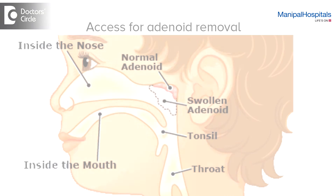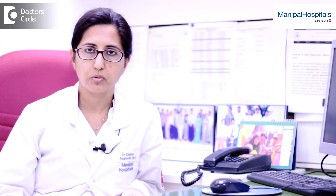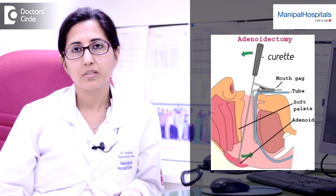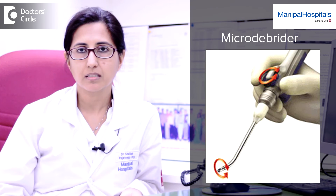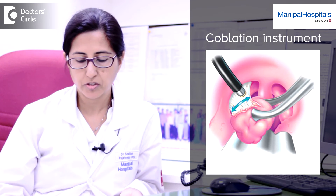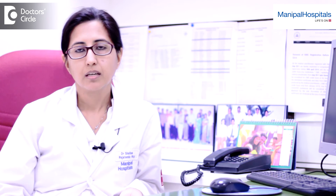The adenoids are removed mostly from the mouth and through the nose. Different instruments and techniques are used for removal of the adenoid gland — for example, adenoid curate, microdebriders, coblation instrument, suction diathermy, and very occasionally laser. The area is packed with gauze to help stop the bleeding.